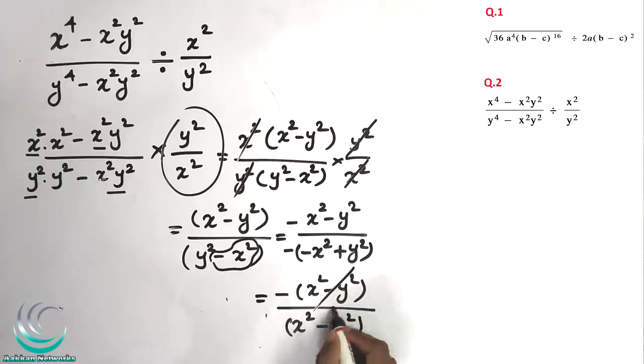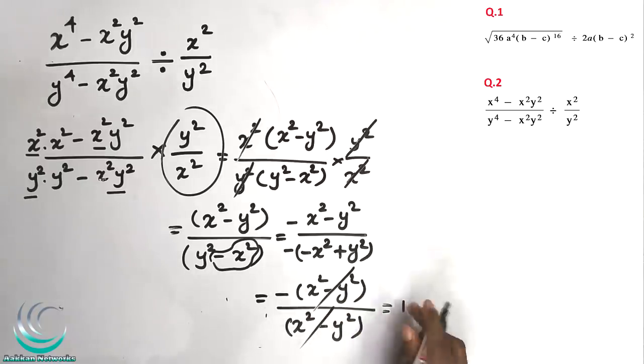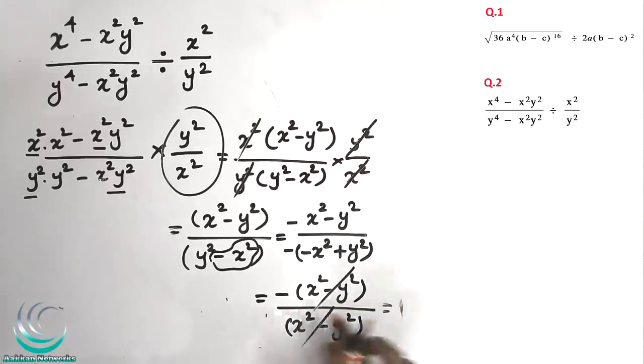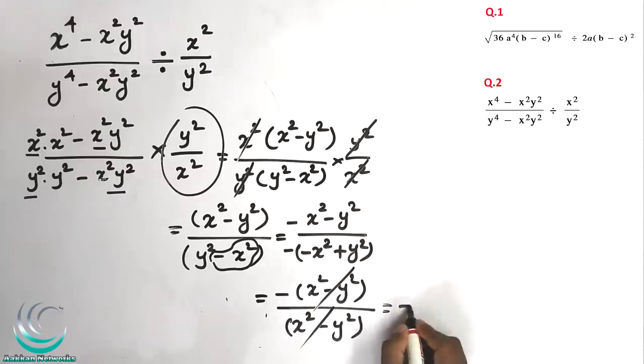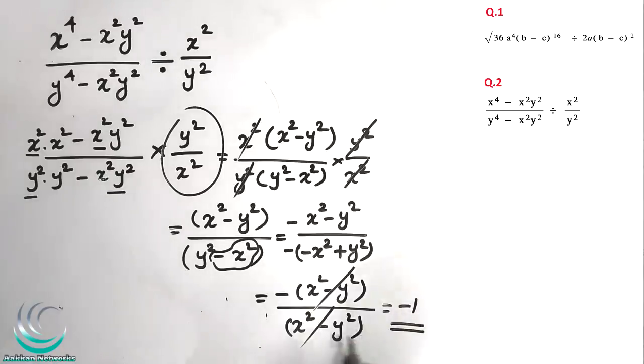Cancel: one cancels, two cancels, giving minus 1. The minus is over — minus 1 is the final answer.